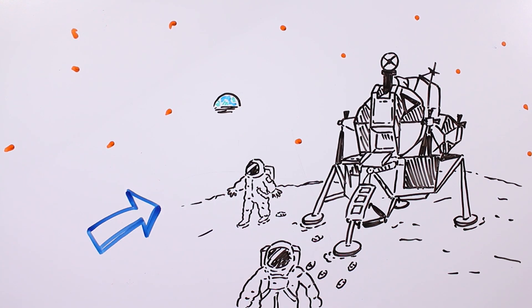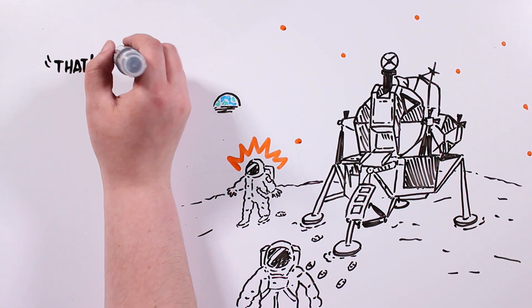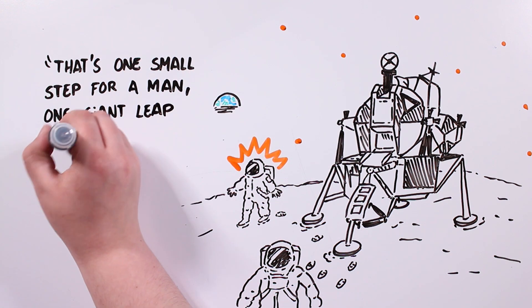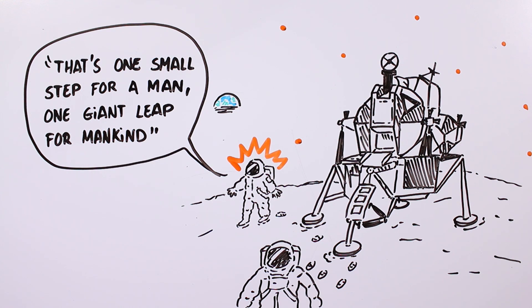Everybody saw Neil Armstrong become the first human to step on the moon, a moment he coined with one of the most famous phrases in history – one small step for man, one giant leap for mankind.